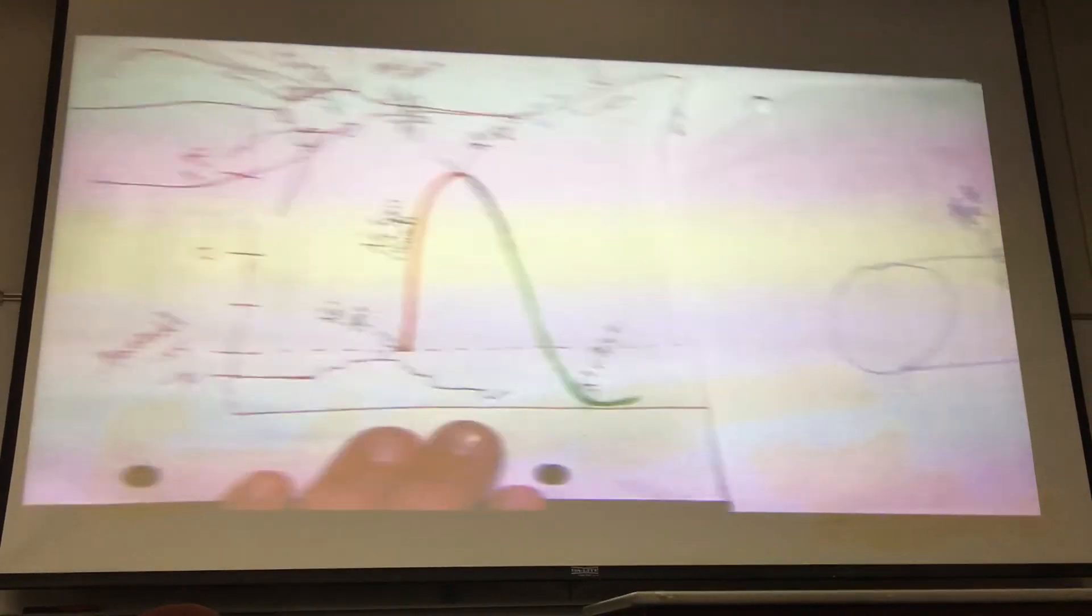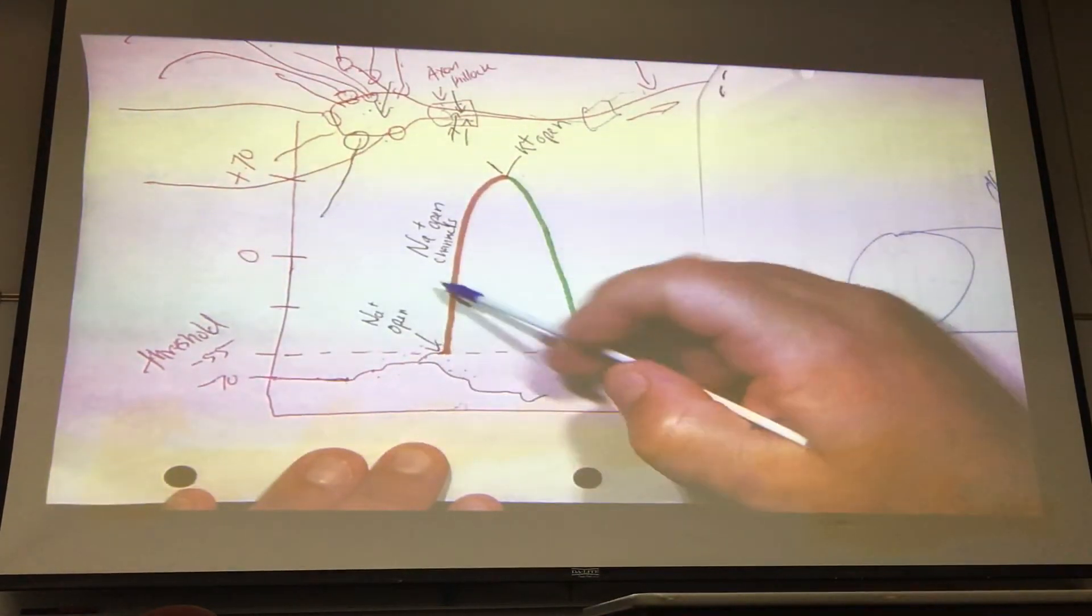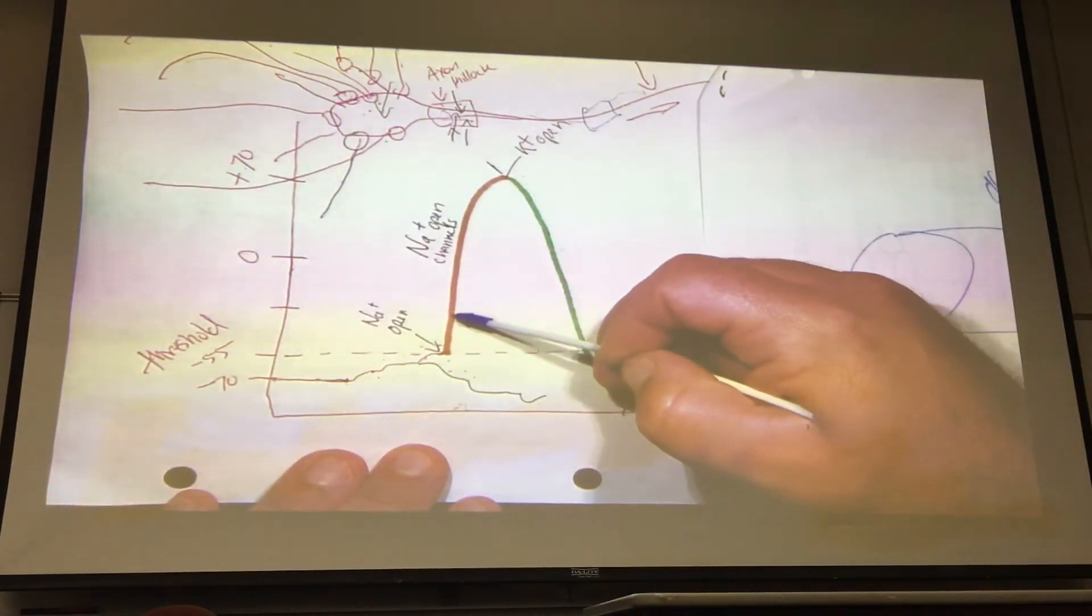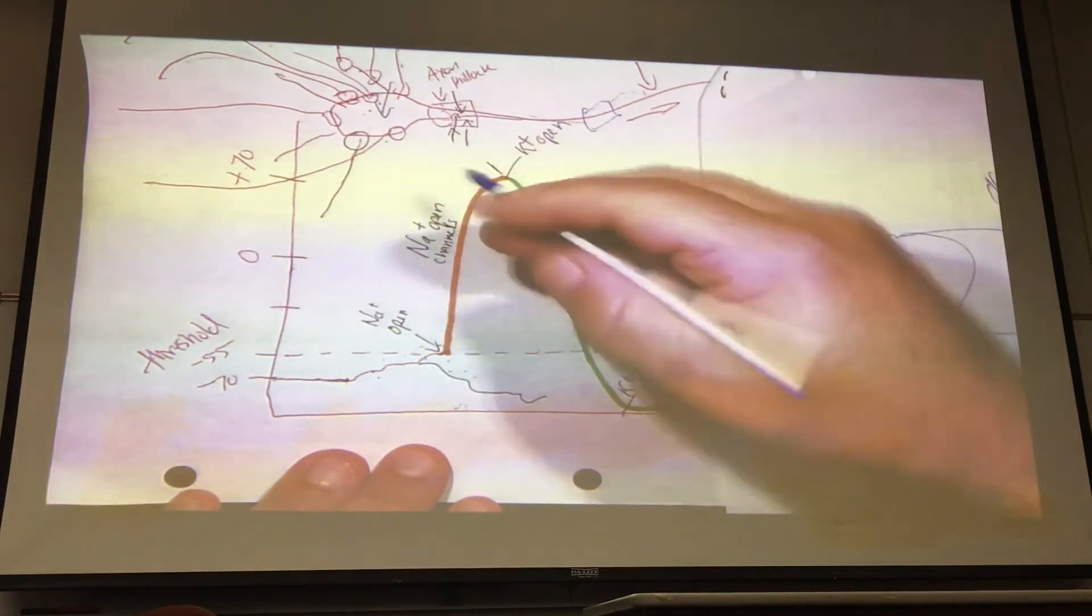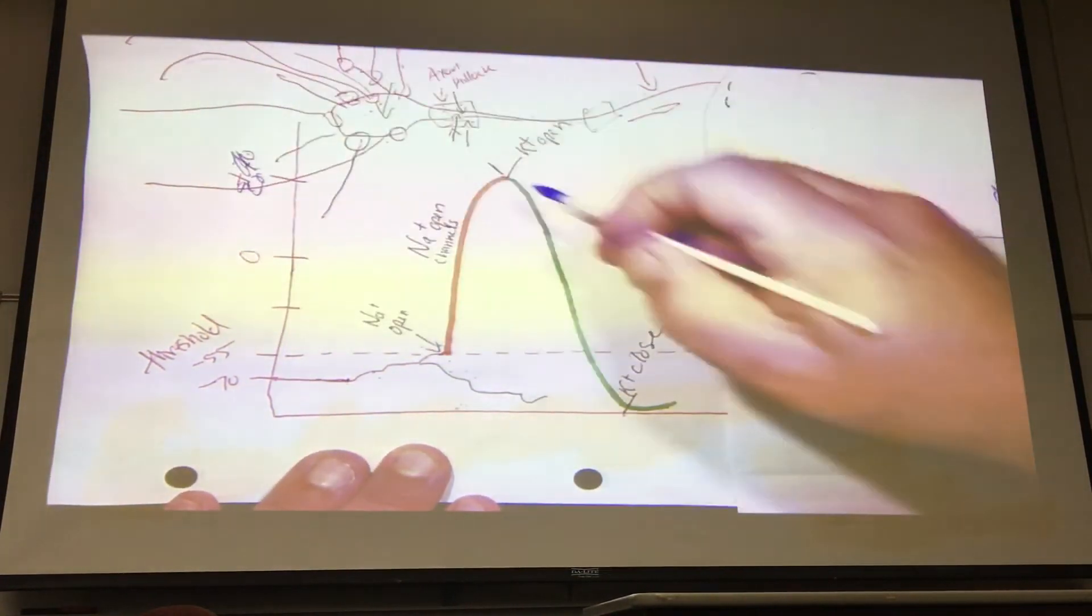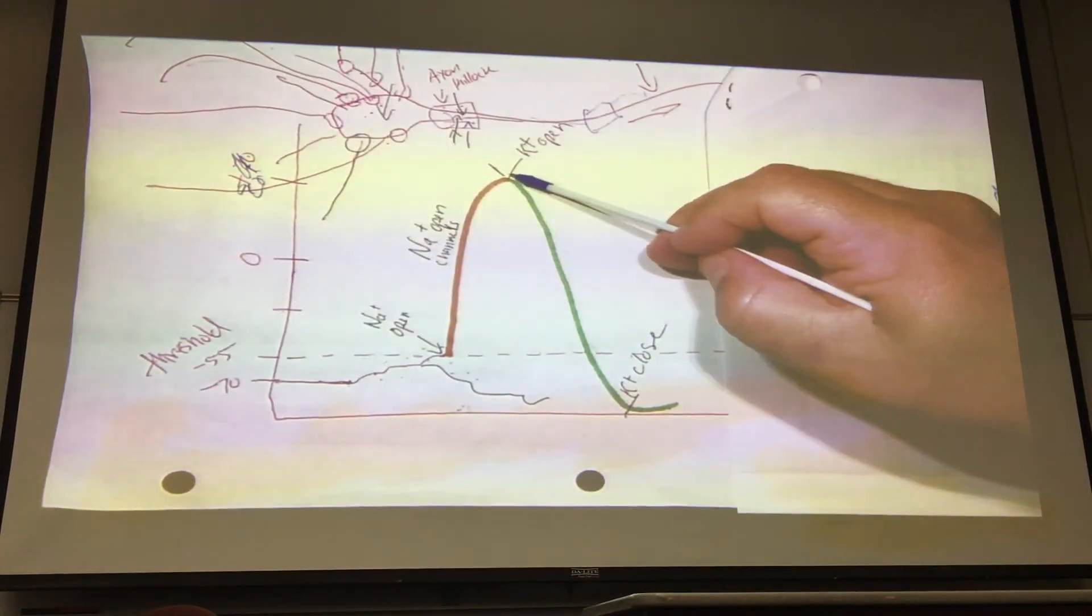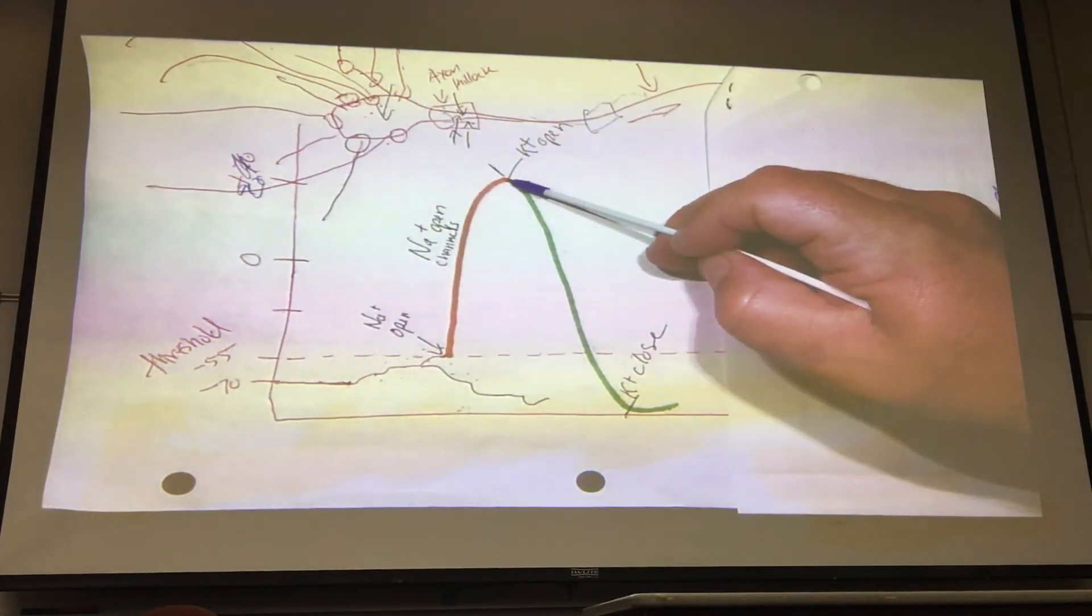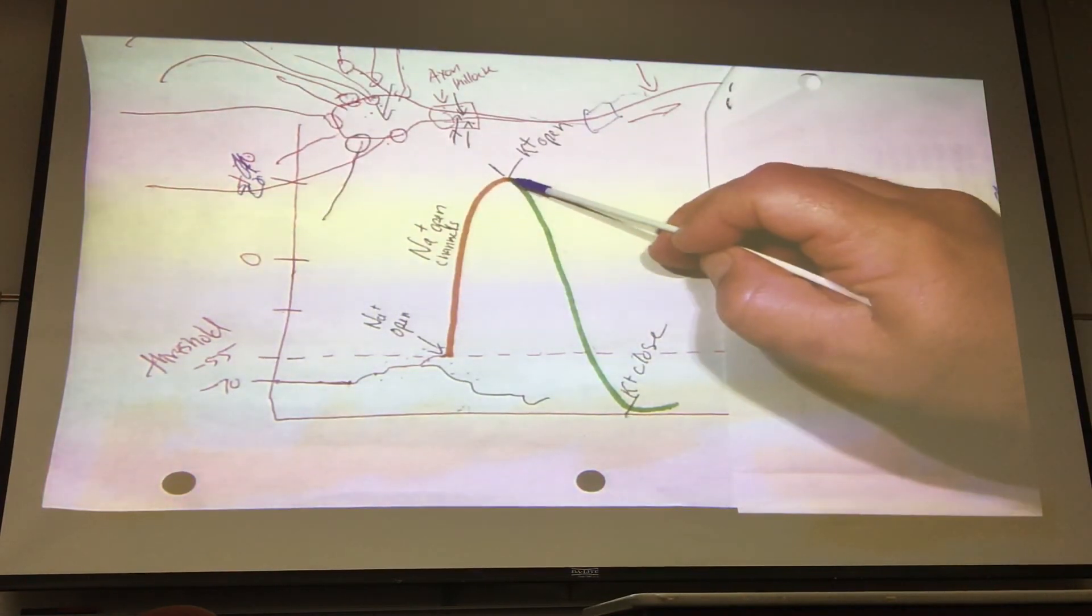Well, when sodium floods in, here's the gate opening. Sodium is going to come in, more sodium comes in. This is only like plus 20, by the way. And at a certain point in time, the sodium channels that are once open are going to close, and that's at this differentiation.